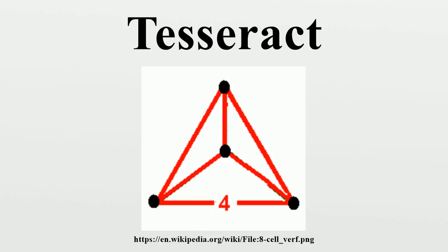The tesseract can be constructed in a number of ways. As a regular polytope with three cubes folded together around every edge, it has Schläfli symbol 4-3-3, with hyperoctahedral symmetry of order 384. Constructed as a 4D hyperprism made of two parallel cubes, it can be named as a composite Schläfli symbol 4-3, with symmetry order 96.